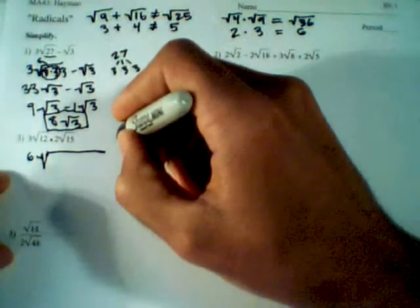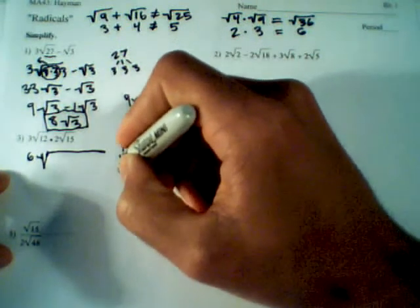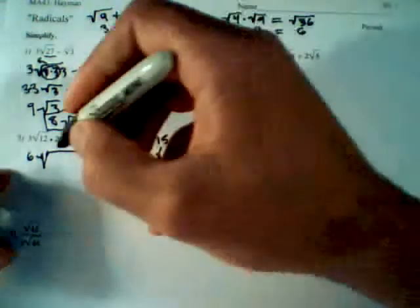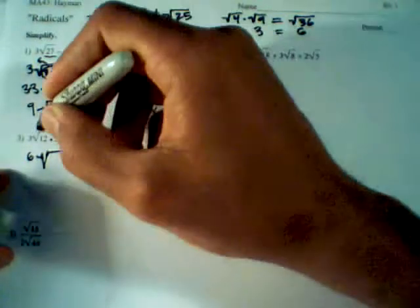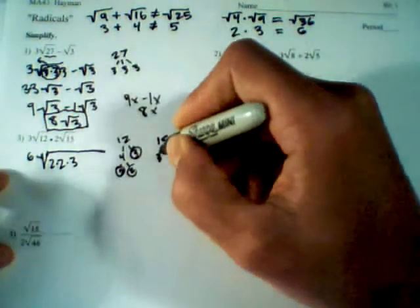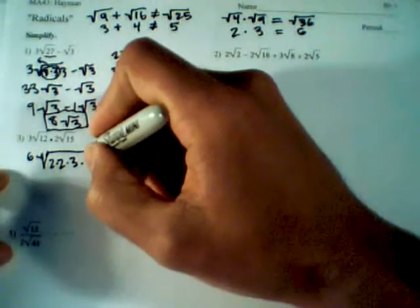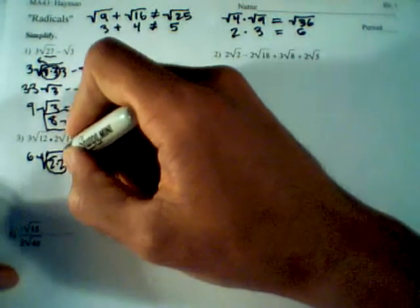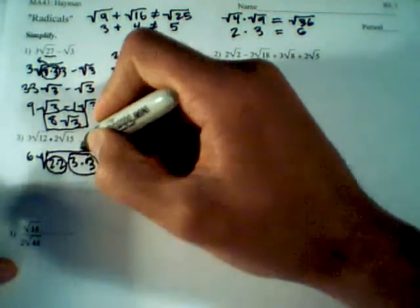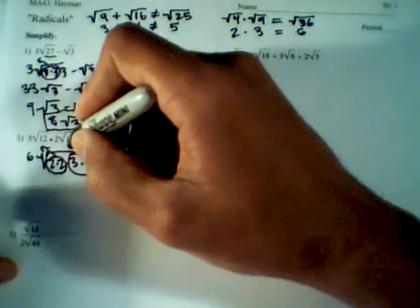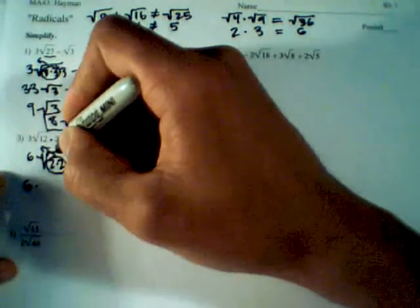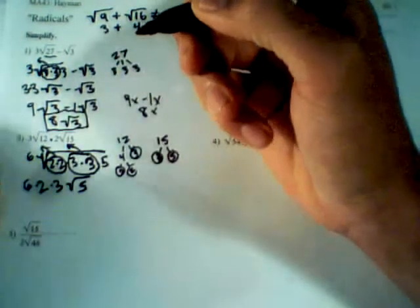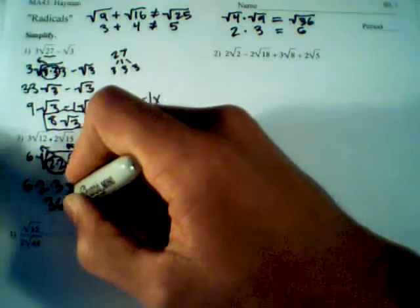We've got 12, which breaks down into 4 times 3, and 4 is 2 times 2. And we also have 15, which is 3 times 5. So altogether underneath we have 2 times 2 times 3 times 3 times 5. We can unsquare the 2s — they're being squared. We can unsquare the 3s — they're being squared. We cannot unsquare the 5 because it's not being squared. So we have the 6 outside, times the unsquared 2, times the unsquared 3, with 5 underneath. 6 times 2 is 12, times 3 is 36. Our answer is 36 root 5.